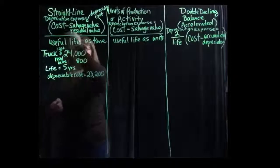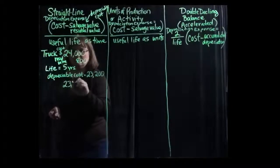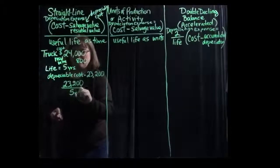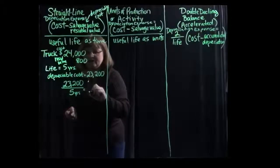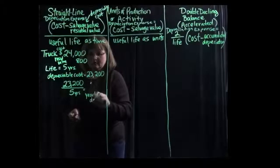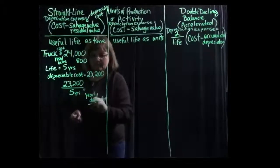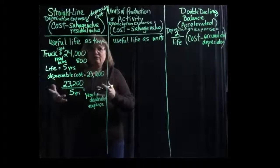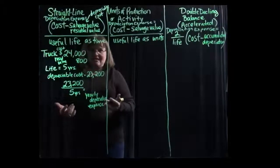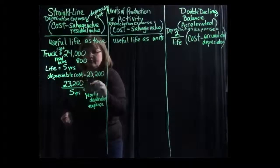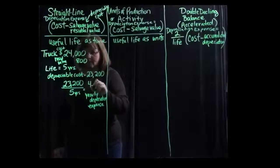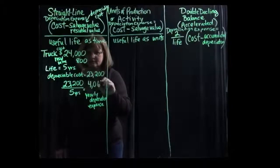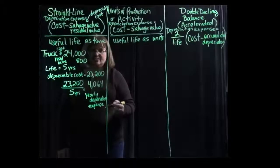Using the straight line method — that's our cost minus our salvage value — we would divide $23,200 by five years to get the annual depreciation expense. If we had that asset for less than a year, for example in the year of acquisition or the year of disposal, we would need to adjust that for however many months we actually had the asset. Assuming we had it for a whole year, we would get $4,640 as our yearly depreciation expense.